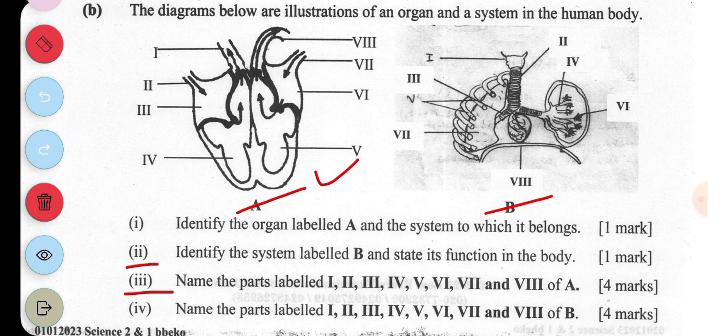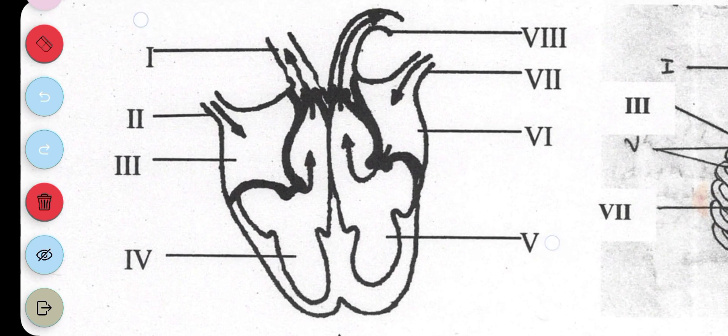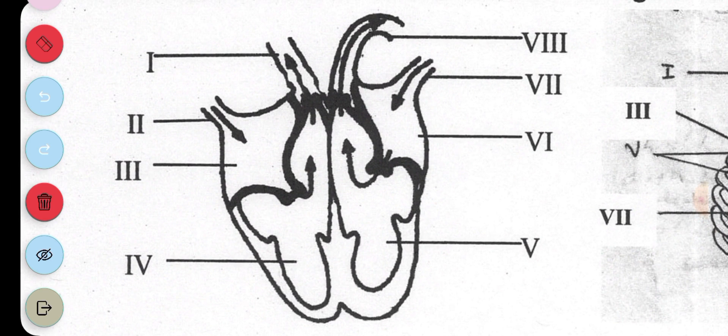Part three asks us to identify the parts labeled of A. I want to zoom in so we can look at the parts in detail. This is the human mammalian heart.